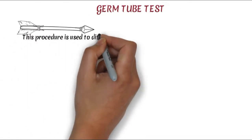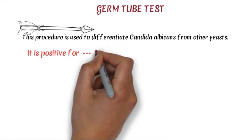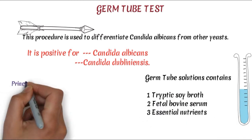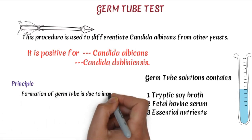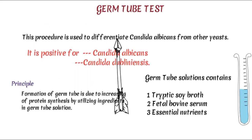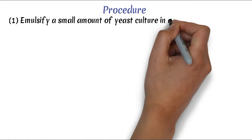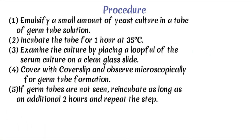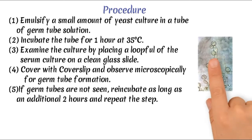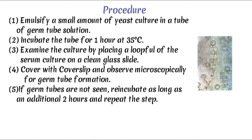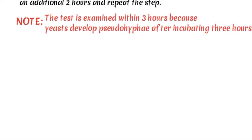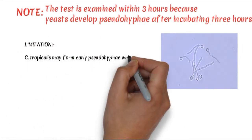Another important technique is the germ tube test. This is a procedure used to differentiate Candida albicans from other yeasts. It is mainly positive for Candida albicans and Candida dubliniensis. The germ tube solution contains tryptic soy broth or bovine serum; human serum may also be used as it provides essential nutrients for protein synthesis. The principle is that germ tube formation is due to increased protein synthesis utilizing ingredients in the germ tube solution. Procedure: Emulsify a small amount of yeast culture in a tube of germ tube solution. Incubate for 1 hour at 35°C. Take a drop of serum from the tube, place on a clean glass slide, cover with a cover slip, and observe under microscope. If germ tubes are not seen, re-incubate for up to an additional 2 hours. The test must be examined within 3 hours because yeast develop pseudohyphae after long-term incubation. Limitation: Candida tropicalis may also develop pseudohyphae in vitro.